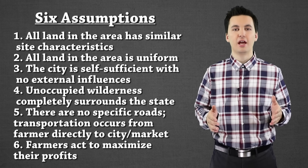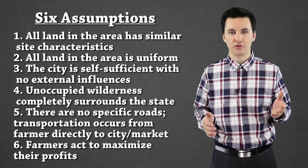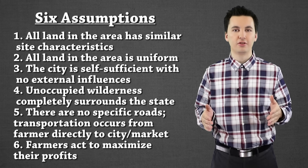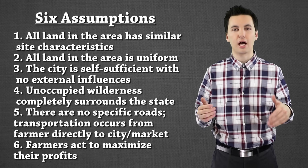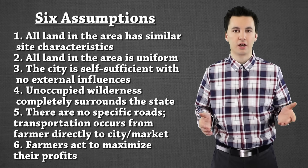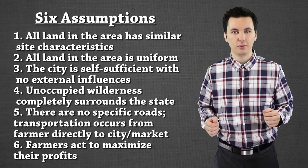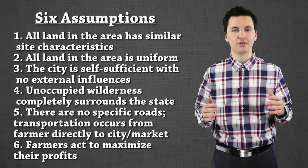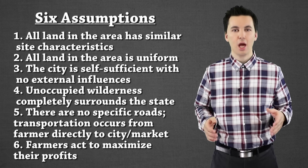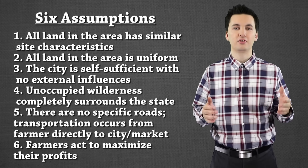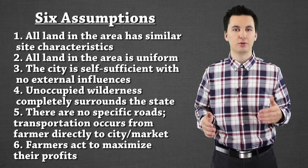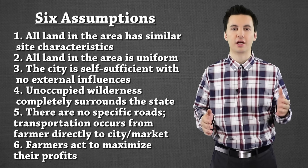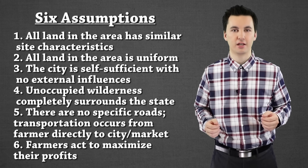Von Thunen had assumptions like, for example, that all land is uniform, to make it so that you could apply this model to a variety of geographic areas. Von Thunen knew that not all land was flat or exactly the same, but by putting this into the model, it made the model able to adapt to different geographic environments when you apply it to different societies.